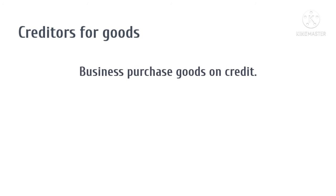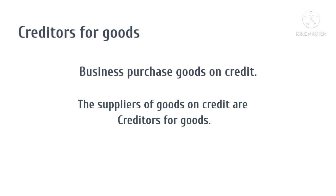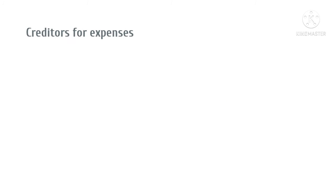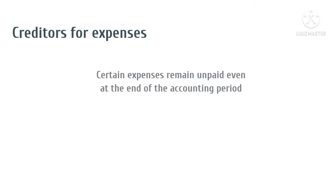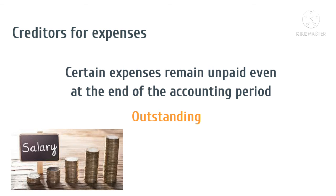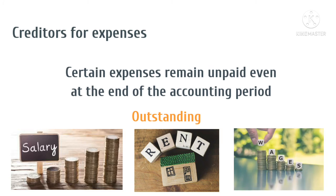Creditors for goods: each and every business purchases goods on credit, and the suppliers of goods on credit are creditors for goods. Creditors for loans include banks and financial institutions. Creditors for expenses are certain expenses that remain unpaid at the end of the accounting period, like outstanding salaries, fees, outstanding rent, outstanding wages, etc.